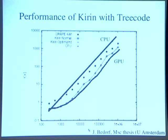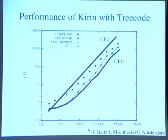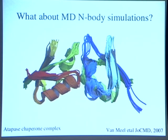We also implemented KIRIN in a tree code — it's basically the same library, but we used one of Makino's tree codes which uses GRAPE, and we just replaced the GRAPE calls with our KIRIN library calls. Here you see the CPU performance, the GRAPE performance, and the CUDA performance on the GPU, which is about a factor of 50 better than the CPU and slightly better than GRAPE for a single chip.